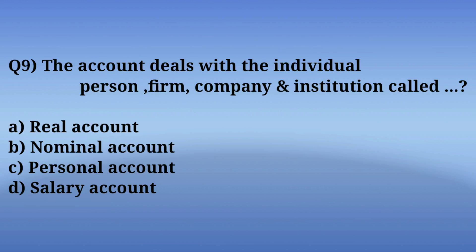Question number 9: The account that deals with an individual person, firm, company, and institution is called what? Options are: A. Real account, B. Nominal account, C. Personal account, D. Salary account. The correct answer is Option C — Personal account.